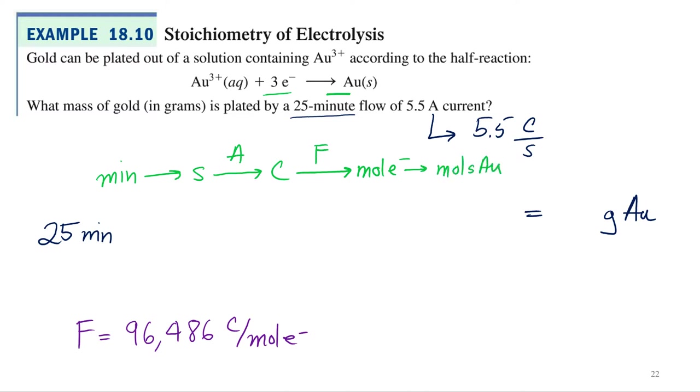So I can go from moles of electrons to moles of gold. That's fun to say. Moles of gold. There's moles of gold up in them hills. And then I can go from moles to grams pretty easily, right? Just using the molar mass.